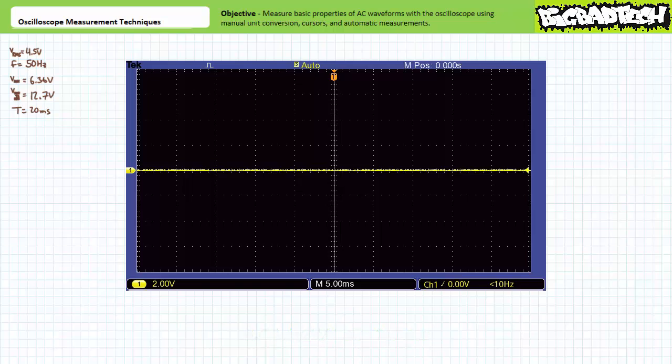Given we anticipate a 20 millisecond period and the o-scope display includes 10 divisions, left to right, a horizontal sensitivity of 5 milliseconds per division might do the trick. Given this horizontal sensitivity, we should anticipate a full cycle to be roughly 4 divisions wide on our display to accommodate 2 plus full cycles.